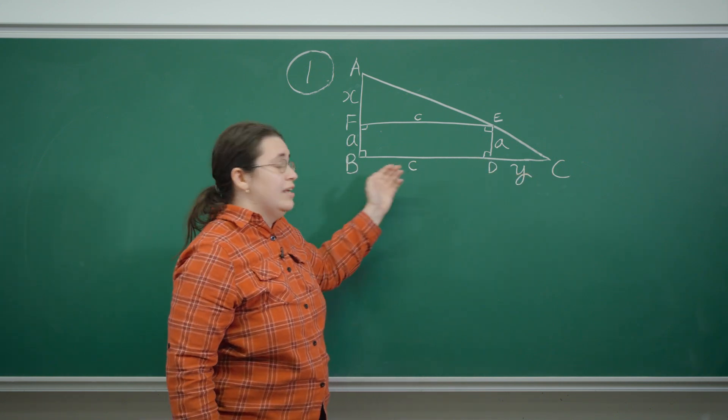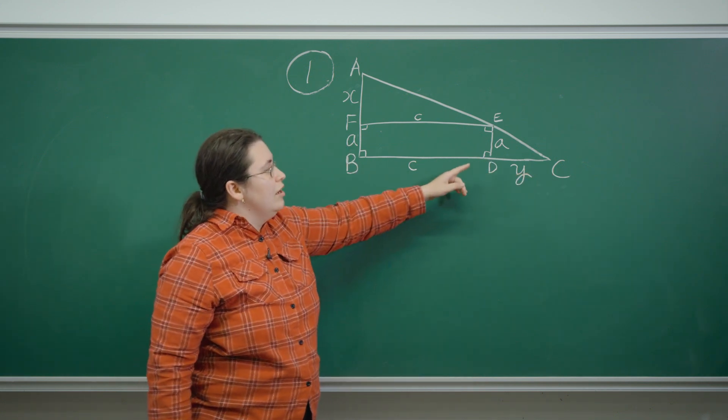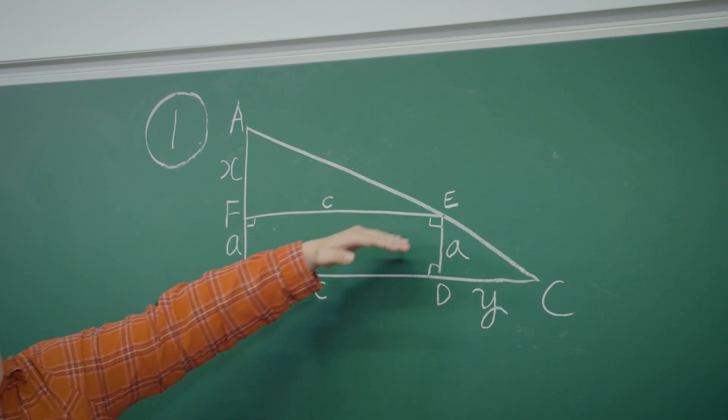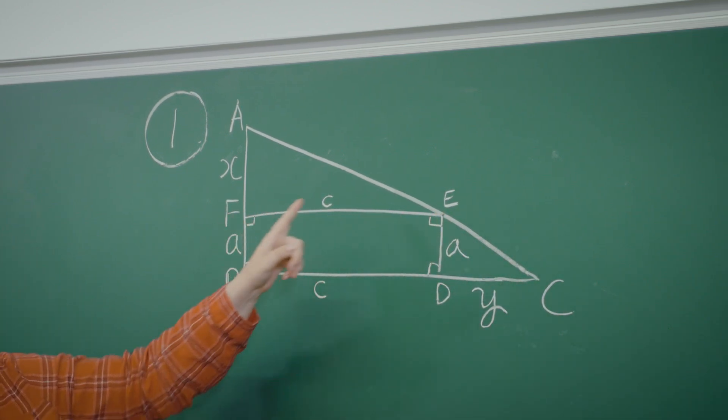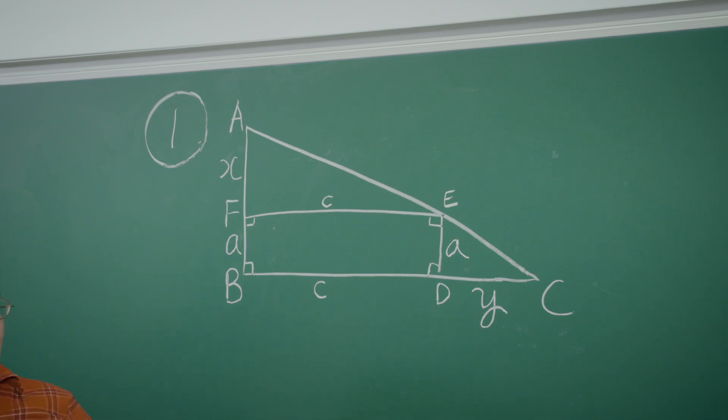Because C lies on the extension of BD, it follows that these two lines are parallel and the angle DCE and FEA are equal because they're corresponding angles at parallel lines.